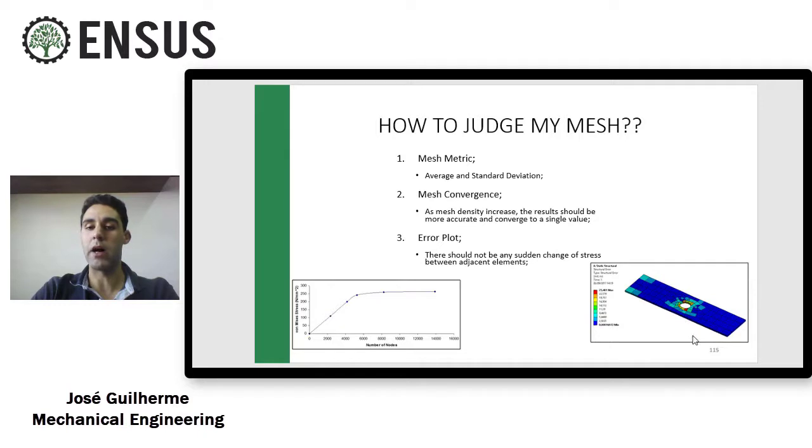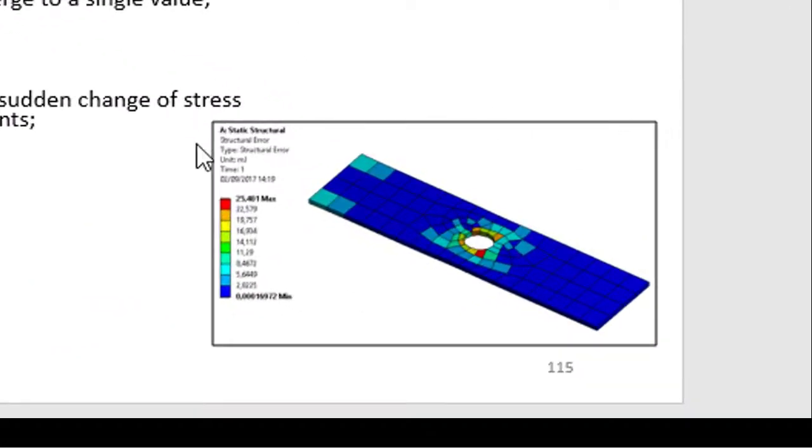The error plot shows the difference between the stress that I have from one element to the other element beside this one. So if you see this image that I plot here, you're gonna see the red element.